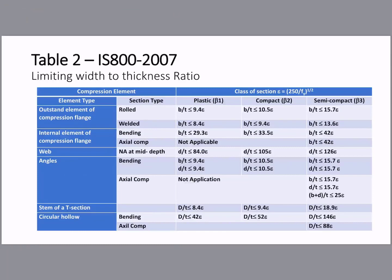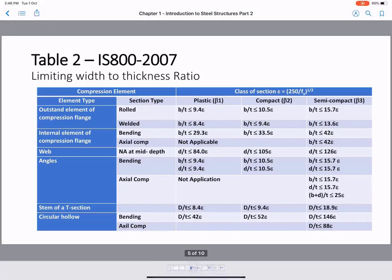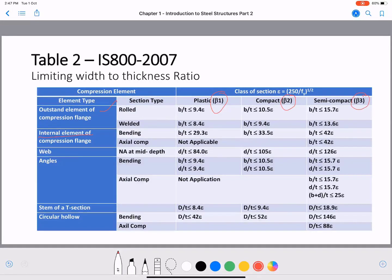The limiting values beta 1, beta 2, and beta 3 are defined in IS 800 code, Table 2, clauses 3.7.2 and 3.7.4, in detail for outstand elements, internal elements, web elements, and angle sections. Beta 1 corresponds to plastic, beta 2 to compact, and beta 3 to semi-compact. Beyond beta 3, the section is classified as a slender or Class 4 section.